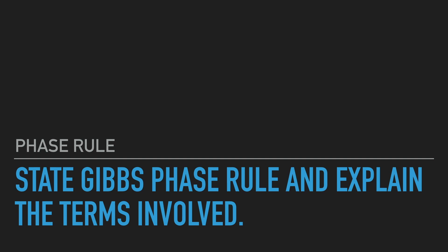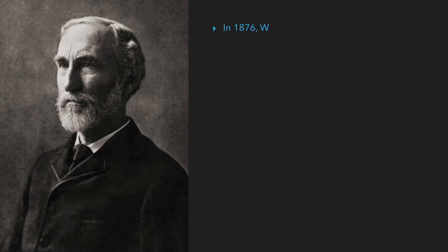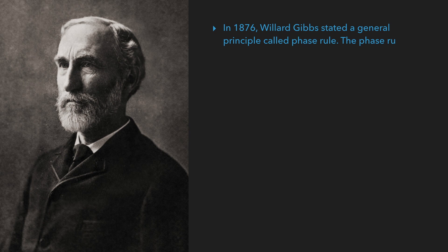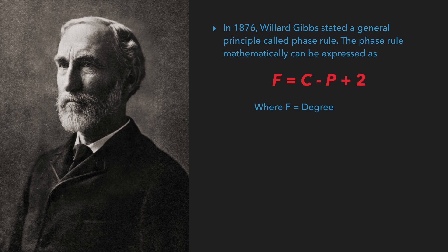State Gibbs phase rule and explain the terms involved. In 1876, Willard Gibbs stated a general principle called the phase rule. The phase rule mathematically can be expressed as f = c − p + 2, where f is degree of freedom, c is number of components, and p is number of phases.